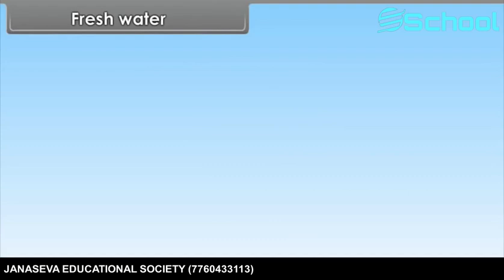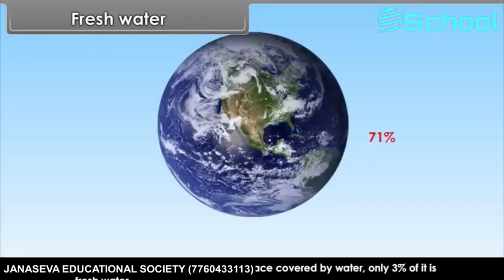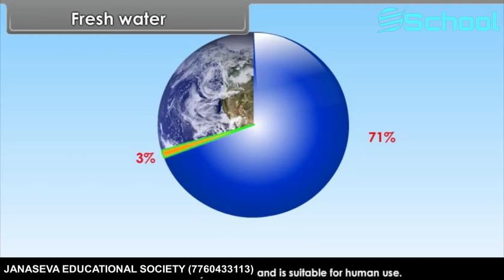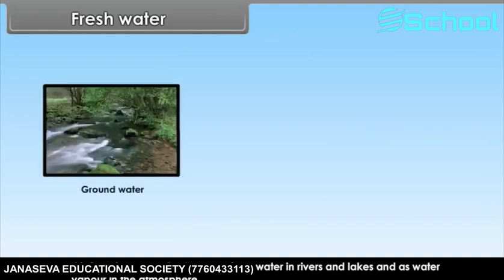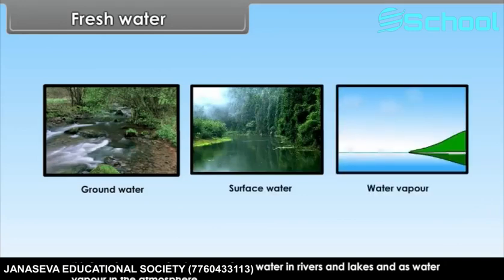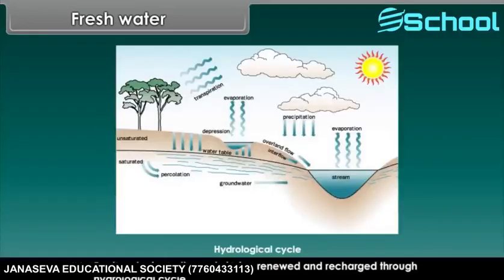Fresh water. Of the 71% of the Earth's surface covered by water, only 3% is fresh water. Fresh water is easily available and suitable for human use. It is found as groundwater, as surface water in rivers and lakes, and as water vapour in the atmosphere. Fresh water is continuously being renewed and recharged through the hydrological cycle.